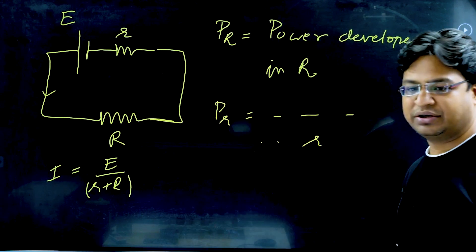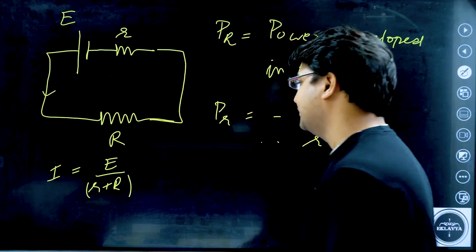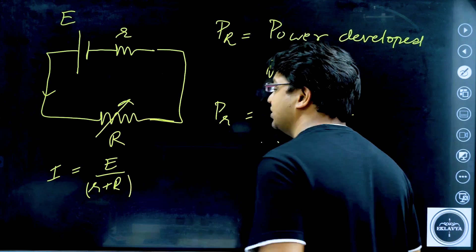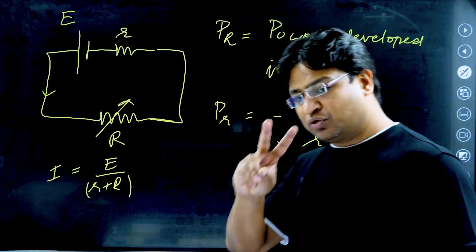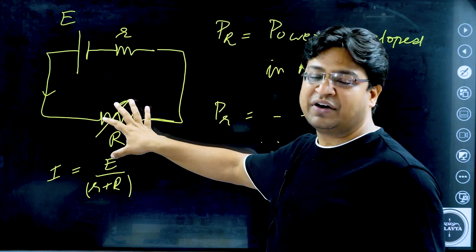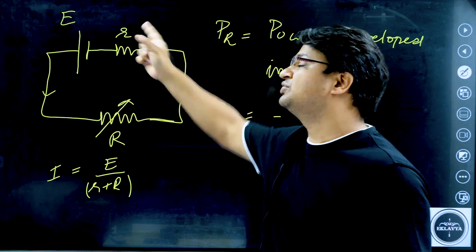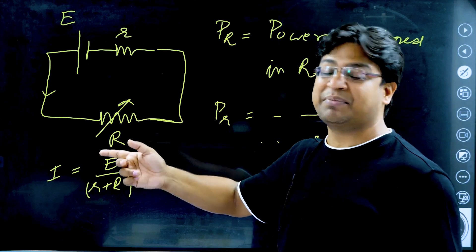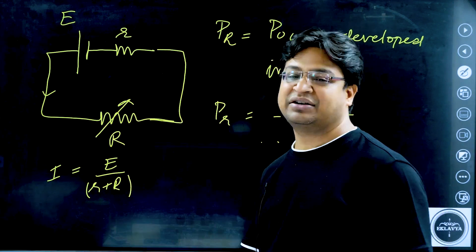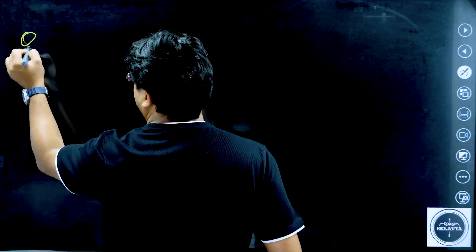Now I have two questions to ask you. This is a variable resistance and I can change it according to my wish. Question one: alter the value of R so that we get maximum power in small r (the internal resistance). Question two: alter the resistance R so that we get maximum power in the resistor R (the external resistance). What is the answer to each?